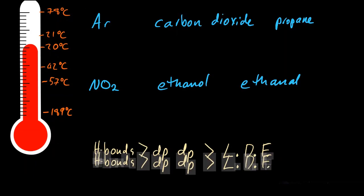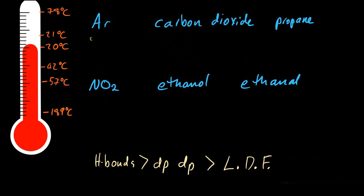Let me draw out the molecules. Argon, simple monatomic gas. Carbon dioxide is linear. Propane is pretty linear as well. It's got a couple of little kinks in it.